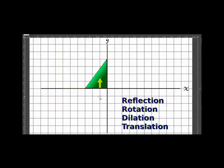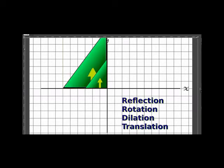This brings us to dilation. Dilation is getting bigger or getting smaller. For example, if we have this triangle here, it's four tall and it's three wide. So, if we were to dilate it, if we were to double the size of it, we might have something that's going to look like this.